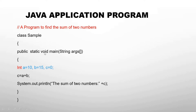Inside the class, there is the main method from which execution starts. The syntax for the main method is: public static void main. Every word has its own meaning, but we will discuss that in coming chapters. You will see: public static void main, with String (capital S) args — args is an array — followed by brackets. You need to learn this syntax as it is used in every program.